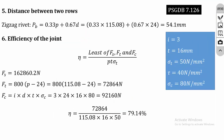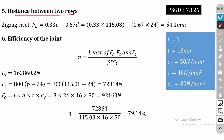The fifth step is the distance between two rows. There are two equations: one for chain riveting and one for zigzag riveting. Since the problem specifies zigzag riveting, we use pb = 0.33p + 0.67d. Substituting p = 115.08 mm and d = 24 mm gives pb = 54.1 mm.